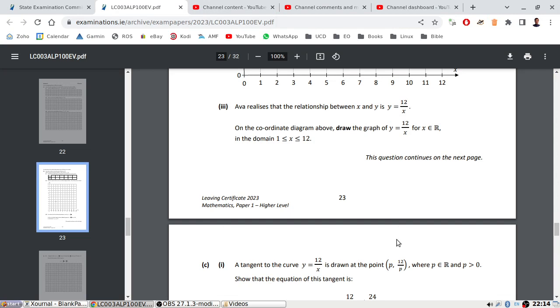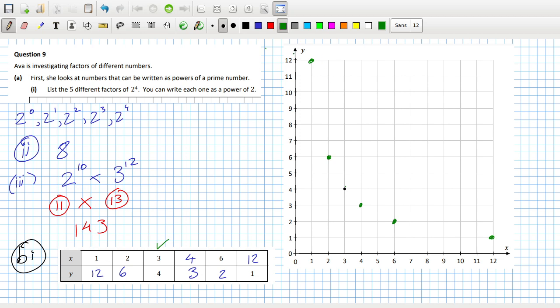Ava realized that the relationship between x and y is y equals 12 over x. On the coordinate diagram, draw that graph y = 12/x in the domain of 1 to 12. Oh, it's just a curve connecting them up from 1 to 12. Okay, there we go.